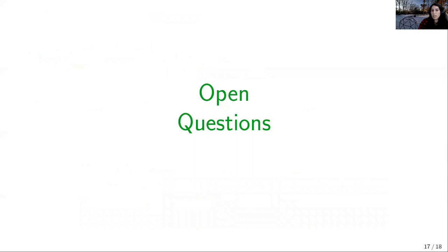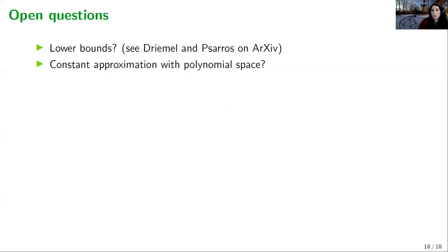Let's conclude with some open questions. Two seem most interesting currently: first, lower bounds — there is a recent paper by Drimel and Seros on arXiv with a lower bound in the cell probe model showing our bounds for the decision distance oracle are almost tight. Second, can we get polynomial space instead of exponential space for the data structure if we are willing to accept a constant approximation? Thank you very much, hope you enjoyed my talk.